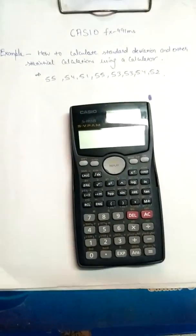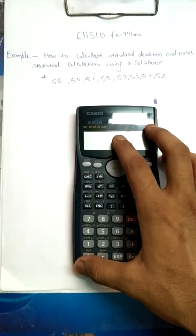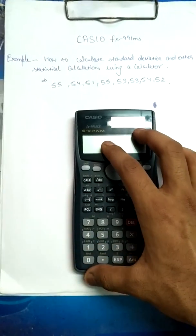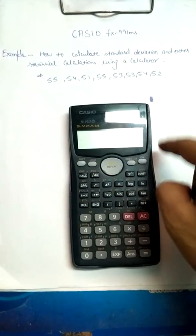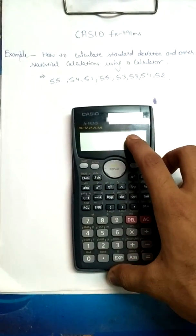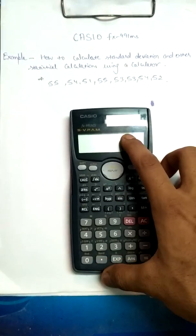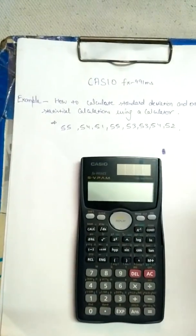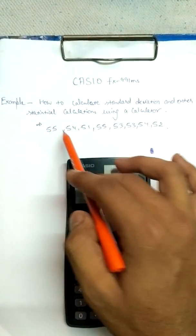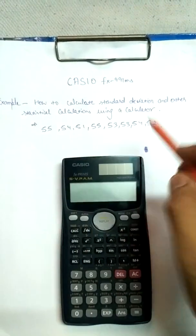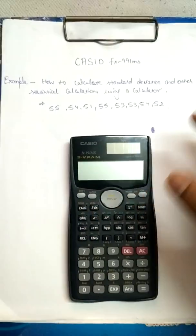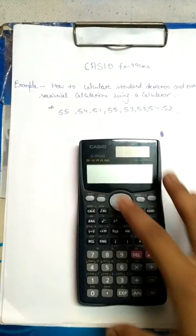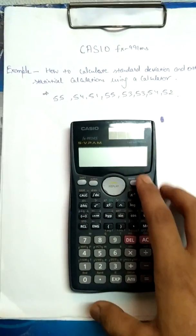Hello guys, we are back with another tutorial of the scientific calculator. In the previous tutorial I showed you how to find the linear regression curve and the coefficient of linear regression. In this tutorial I will tell you how to find the standard deviation and other statistical calculations, like mean, population standard deviation, sum, and square of sums, using this scientific calculator.